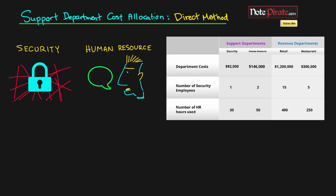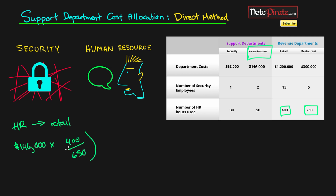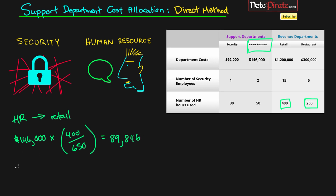Using a different color — green — HR allocating to Retail: we take $146,000 and prorate it by the hours used. Retail uses 400 hours out of a total of 650 hours, because 400 plus 250 is 650. That equals an amount of $89,846 when rounded up to the nearest dollar.